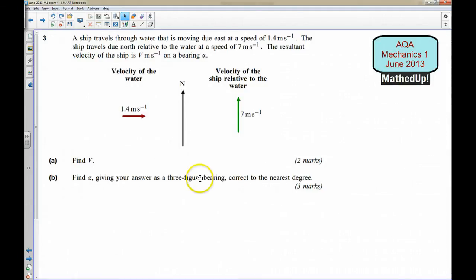Hi, this is question 3 from the AQA June 2013 Mechanics 1 exam paper. In this question we're told that a ship travels through water that is moving due east at a speed of 1.4 metres per second. The ship travels due north relative to the water at a speed of 7 metres per second, and the resultant velocity of the ship is V metres per second on a bearing alpha.